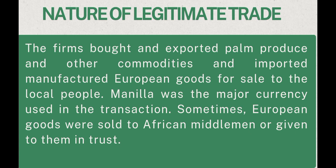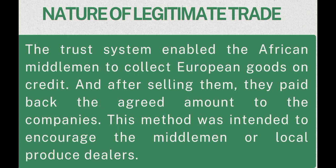Manila was the major currency used in the transactions. Before the advent of Manila as a means of exchange, there was trade by barter, then cowries, then Manila. Sometimes European goods were sold to African middlemen or given to them in trust — the trust system — which enabled African middlemen to collect European goods on credit, and after selling them, they paid back the agreed amount to the companies.